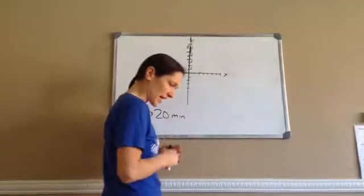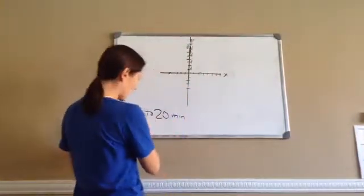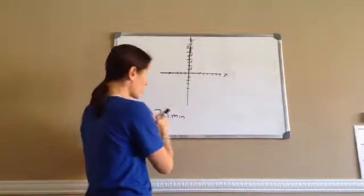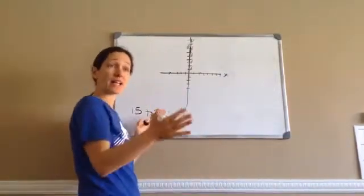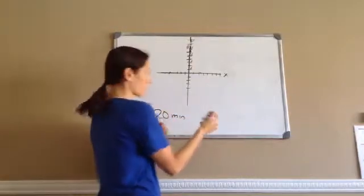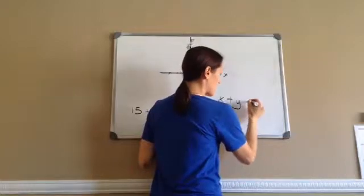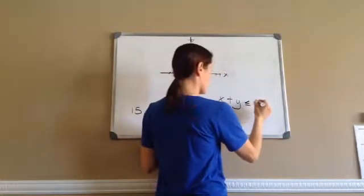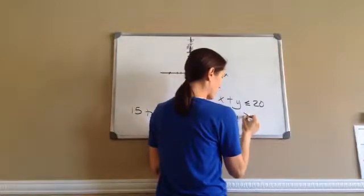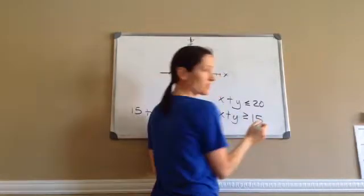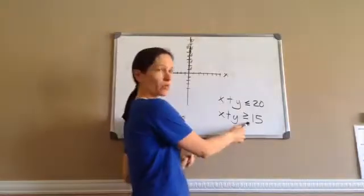As I was saying, this girl Angela runs anywhere between 15 to 20 minutes, and we have to graph that. So let me show you how to write an inequality for this. x plus y is less than or equal to 20 minutes, and x plus y is greater than or equal to 15 minutes. Do you understand what I just showed?